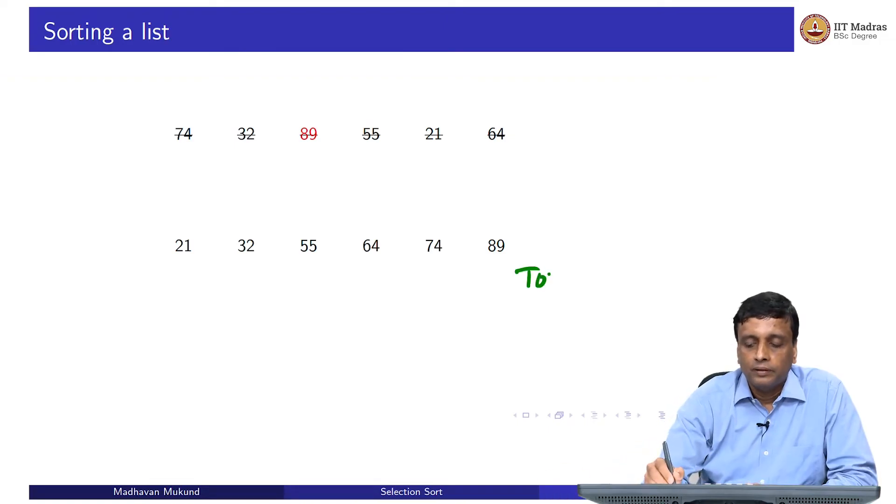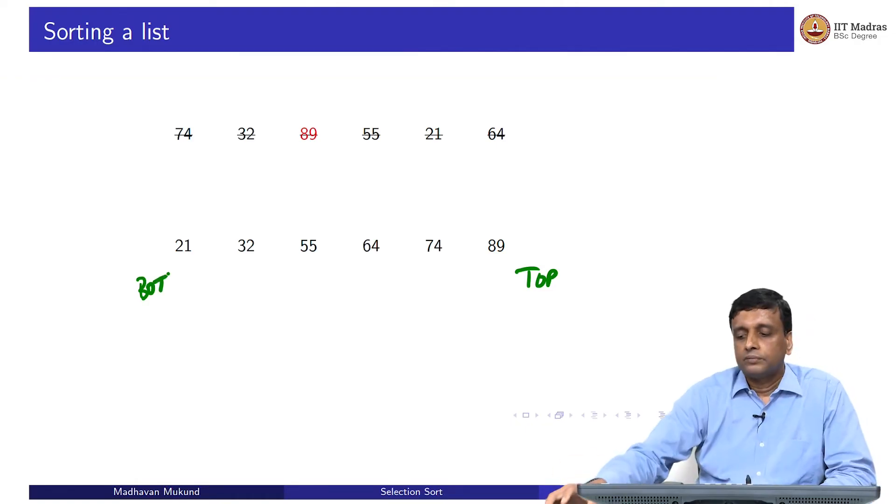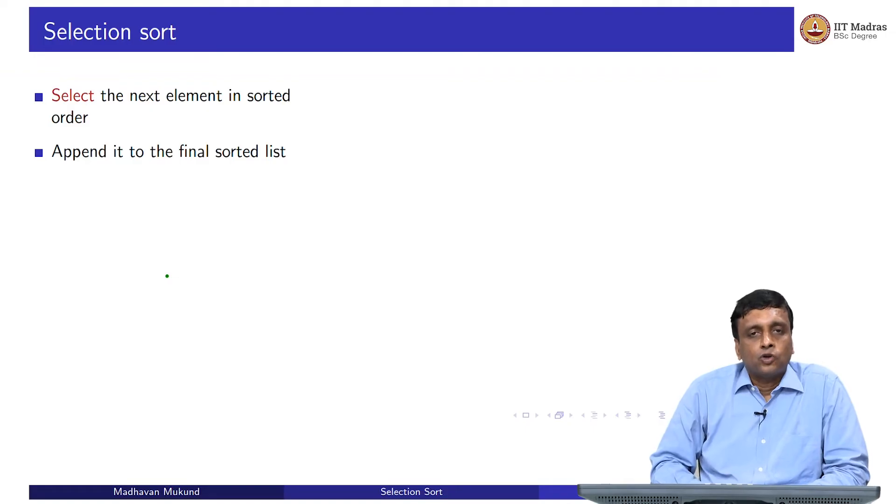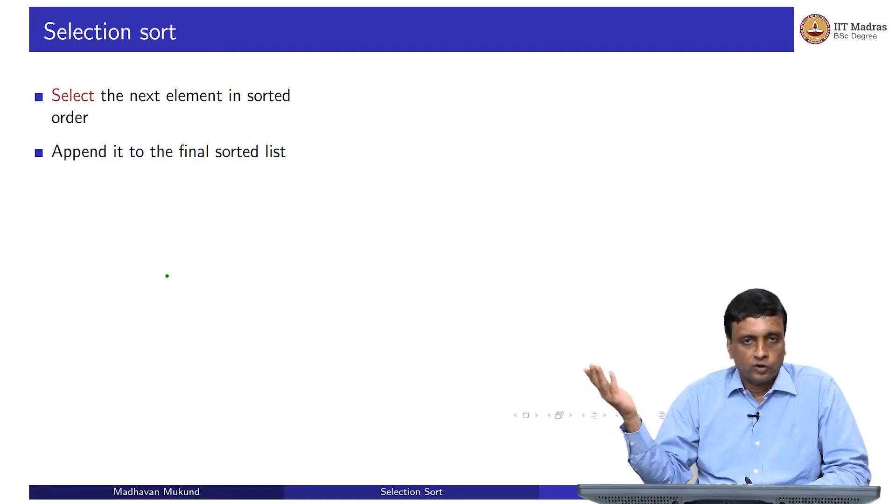This is called selection sort, because we select the next item in sorted order and move it into the correct place. Move it into the correct place in this case is just append it. We do not have to do any work on the second pile. The second pile is growing naturally in sorted order. We are just adding it to that.